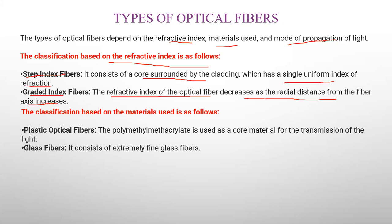The classification based on the material used: materials are divided into plastic optical fiber and glass fibers. Plastic optical fiber is made of a polymer material.